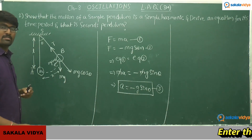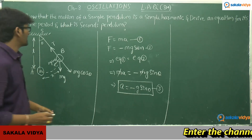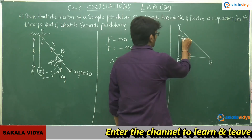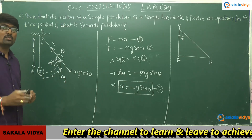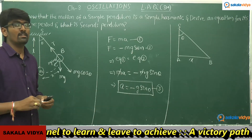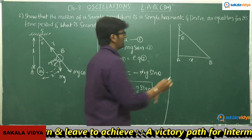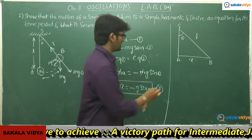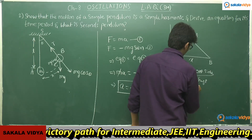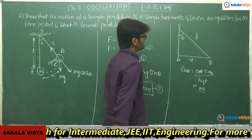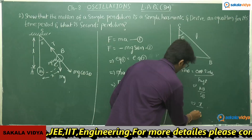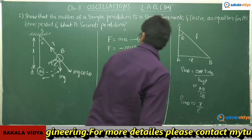From the geometry, points S, A, and B form a right-angle triangle. As the pendulum moves from A to B, it covers a displacement of x units. AB = x and SB = L, the length of the string. Therefore, sinθ = opposite/hypotenuse = AB/SB = x/L. We substitute this value of sinθ into equation 3.